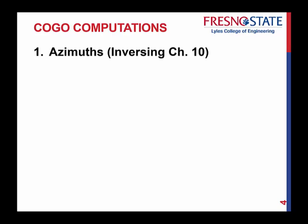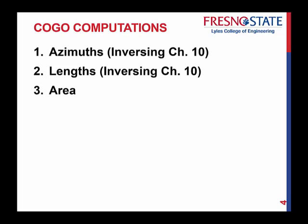Some of the computations we've dealt with in the past, and that will continue on in the future here, are knowing how to compute azimuths. So, we just discussed that in Chapter 10. Lengths through inversing in Chapter 10. We can compute area. That's just creating the right size triangles to be able to compute whatever areas you're looking for. There's other methods to do so.